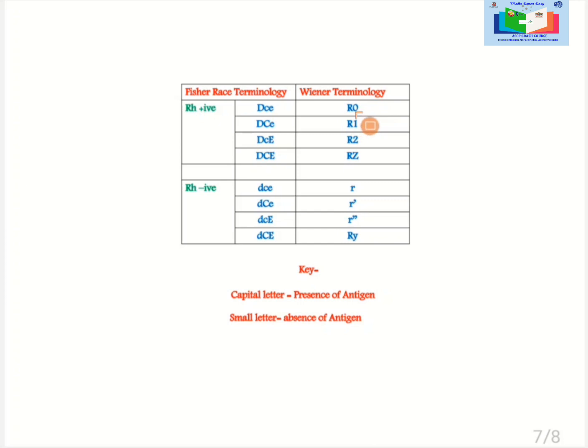Now come to the Wiener terminology as it is a little bit difficult. As we talked in rule number 1 of Wiener terminology that big R denotes the d antigen, meaning when Rh is positive, and in rule number 6 we mention that the absence of both C and E will be noted by 0 in Rh positive. So here R is for big D and 0 for small c and E. In case number 2 again big R as D is present and in rule number 2 of Wiener terminology which states that big C will be represented by 1. In case number 3 again big R as D is present and in rule number 4 it is stated that capital E will be represented by number 2. In case number 4 again big R as D is present and in rule number 5 we state that if both capital C and capital E are present it will be denoted by Z.